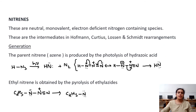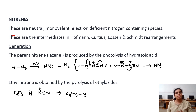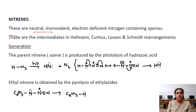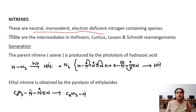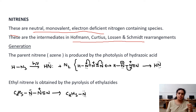Now let us see the characteristics of nitrenes. These are neutral species and are called the nitrogen analog of carbene. They are neutral, monovalent, and electron deficient. Nitrogen-containing species of this type are called nitrenes. These are intermediates in several named reactions, such as Hofmann, Curtius, Lossen, and Schmidt rearrangements.